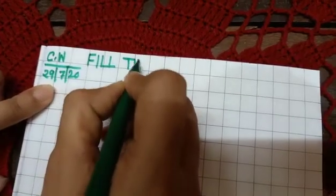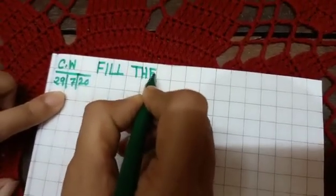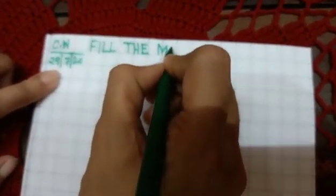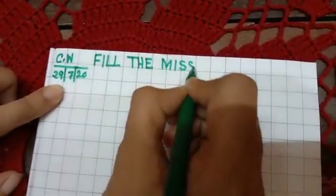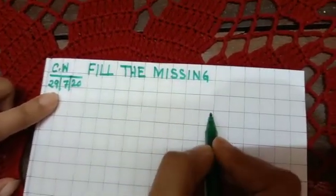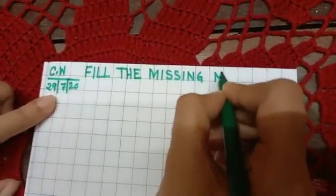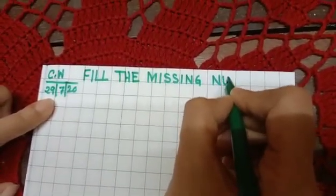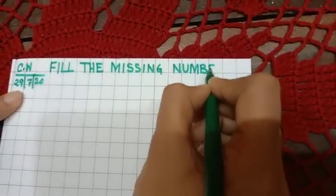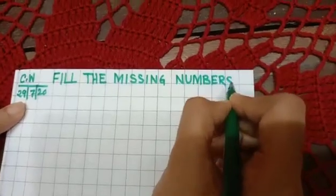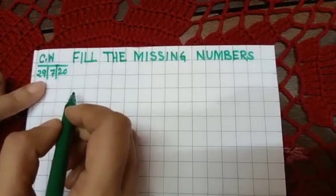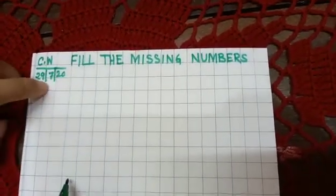Fill the — T, H, E. Fill the missing — M, I, double S, I, N, G. Fill the missing numbers — N, U, M, B, E, R, S. Fill the missing numbers. Okay.